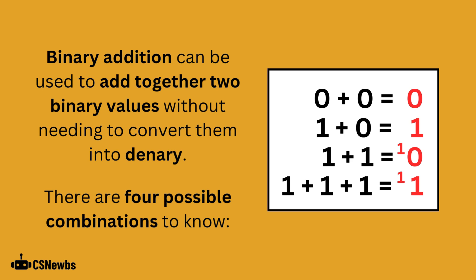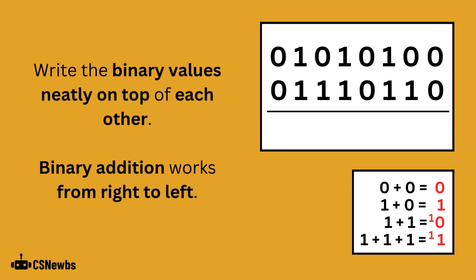1 plus 1 plus 1 is 3. 3 in binary is 1, 1. Write the two binary values that you're going to add together neatly on top of each other. Binary addition works from right to left.